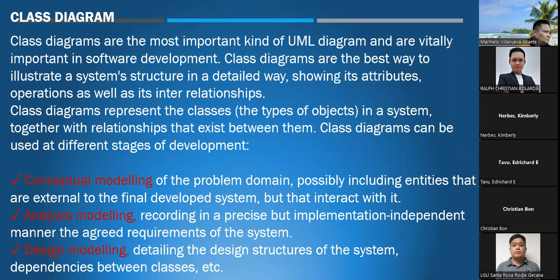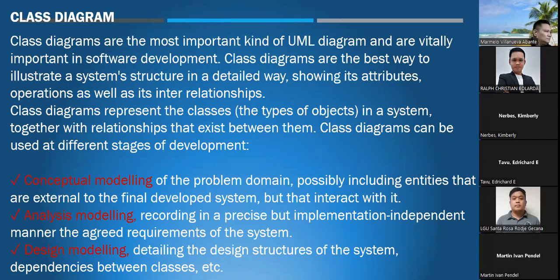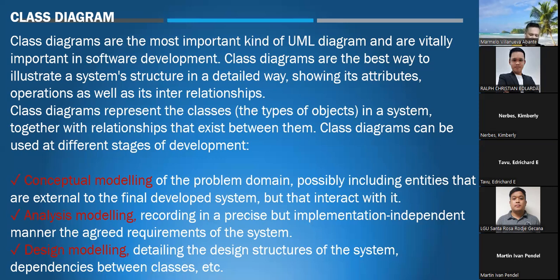Class diagrams are the most important kind of UML diagram and are vitally important in software development. Imagine yourself creating a system — before you create it, you must first create a model. A model will be used as a blueprint of your system before you proceed with programming or coding. A class diagram is the best way to illustrate a system structure, showing in detail its attributes, operations, as well as its entire relationships. A class diagram represents the classes — the types of objects in a system — together with the relationships that exist between them.